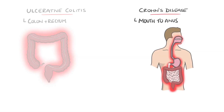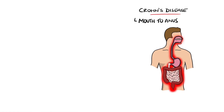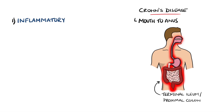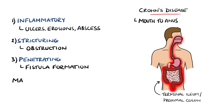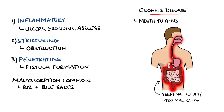Crohn's disease can affect anywhere along the GI tract, but is most commonly found to affect the terminal ileum and proximal colon. There are several subtypes, including an inflammatory variant that can feature ulcers, erosions, and abscess formation; a stricturing type that can lead to obstructions; and a more penetrating variant leading to fistulas. Crohn's disease can also significantly affect absorption of nutrients, with malabsorption of bile salts and vitamin B12 being common due to terminal ileum involvement.